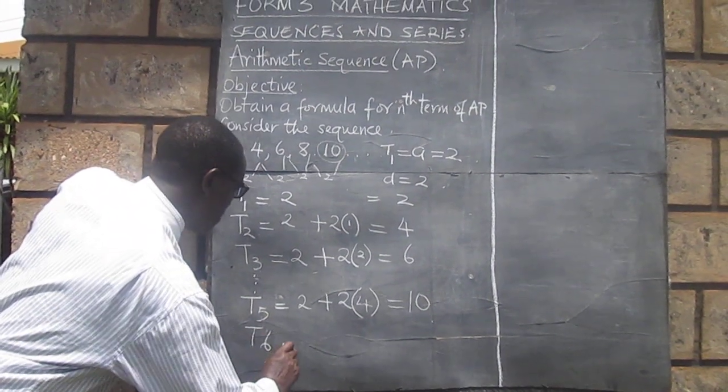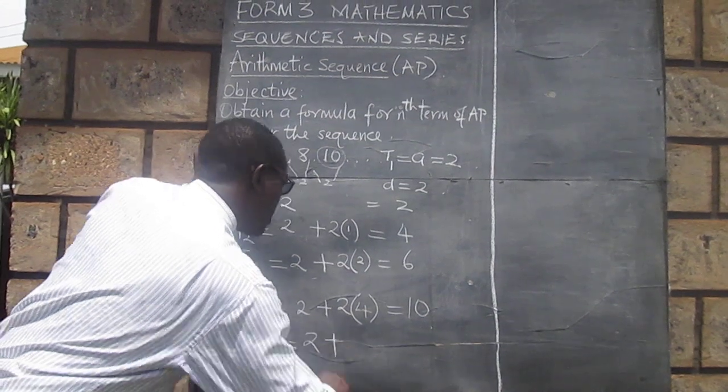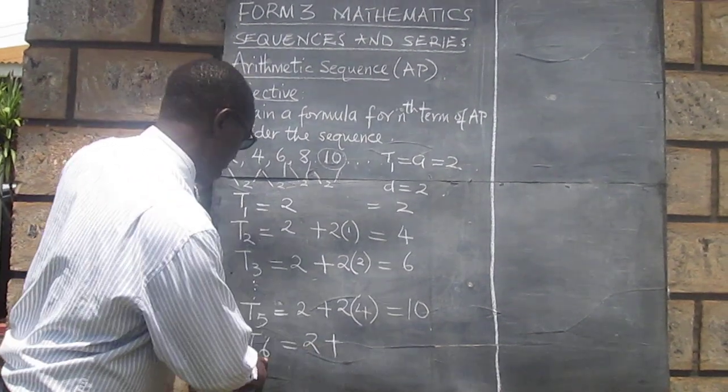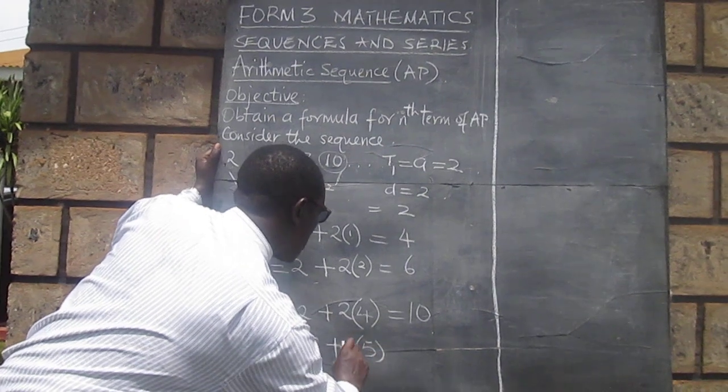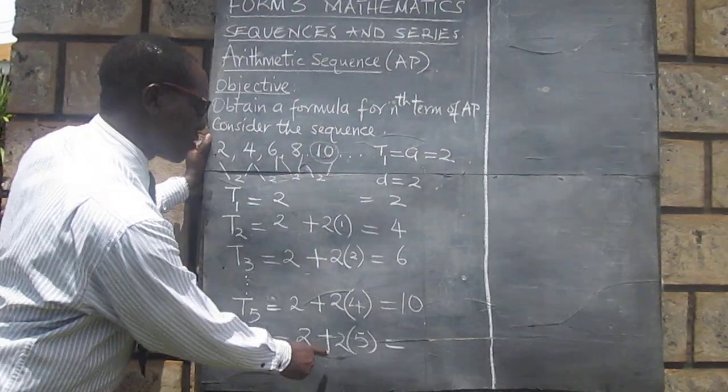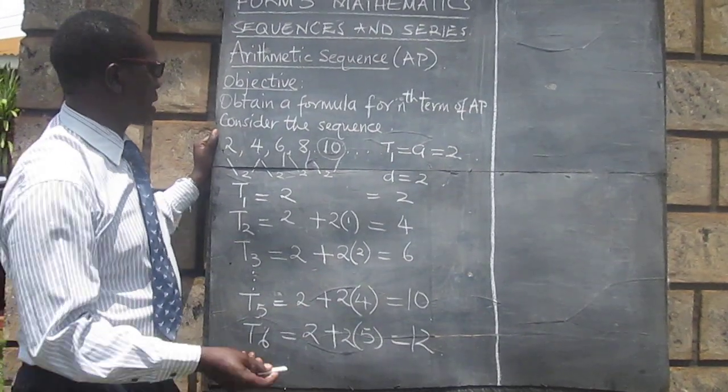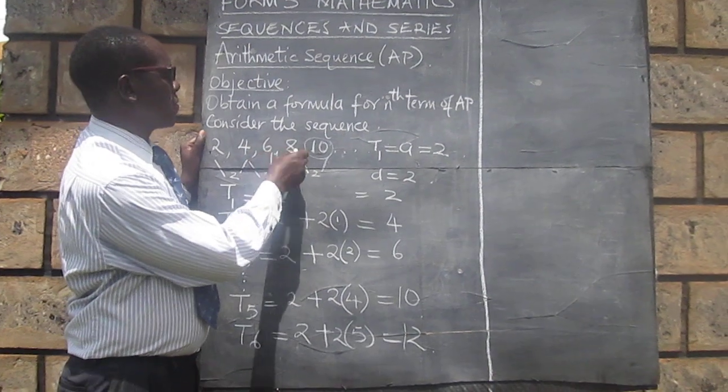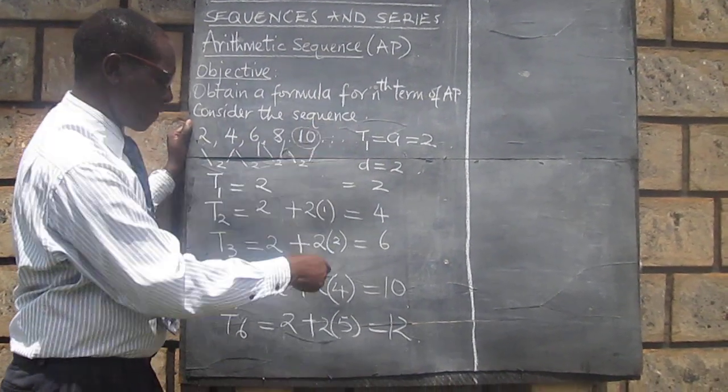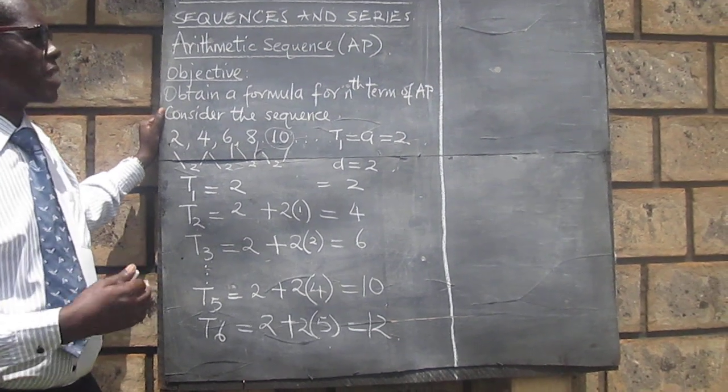The sixth term, term number 6, will be 2 added to 5 times the common difference. And this, let's see, that gives us 12. Is that what we've said it's going to be? 1, 2, 3, 4, 5. The sixth term is 12. So it appears like there is a pattern.